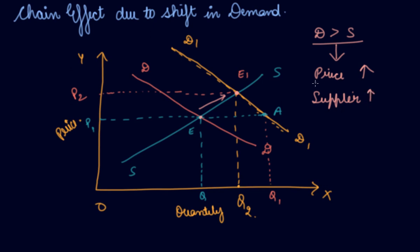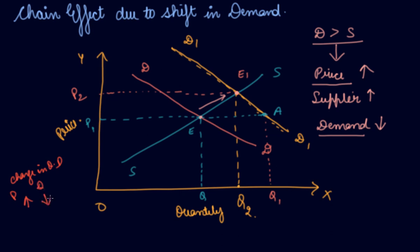According to the law of demand, with an increase in price, quantity demanded decreases. That is a change in quantity demanded due to price. So if price increases, demand decreases — your demand contracts. This contraction of demand is your change in quantity demanded.